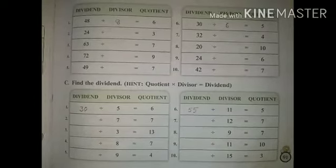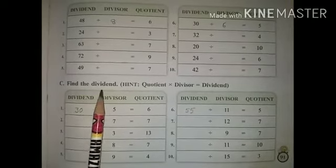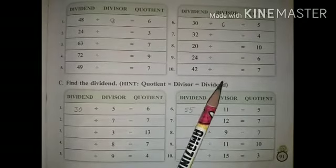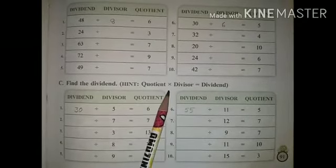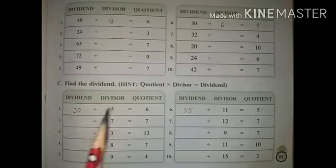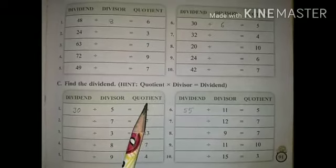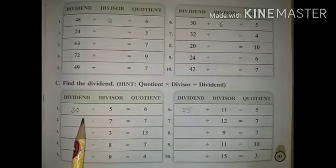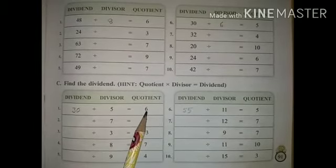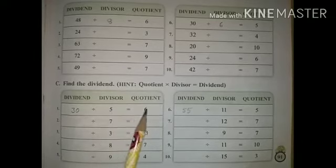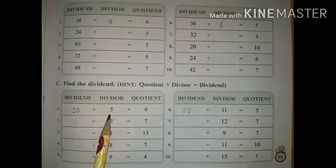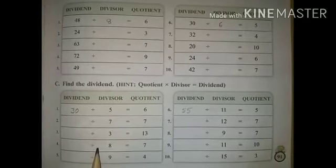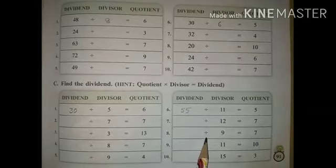Next, Point C: find the dividend. Here is the formula — quotient multiply divisor equals dividend. First question: quotient is 6, divisor is 5, find the dividend. 6 multiply 5 equals 30. So the dividend is 30. Okay students, same as it is — these questions you can solve in the book.